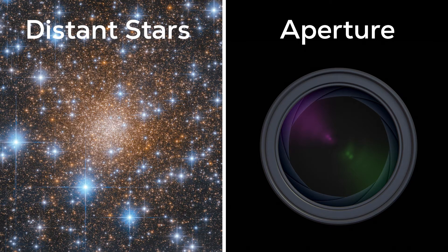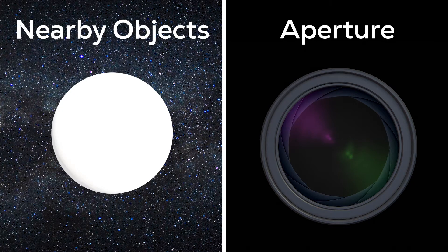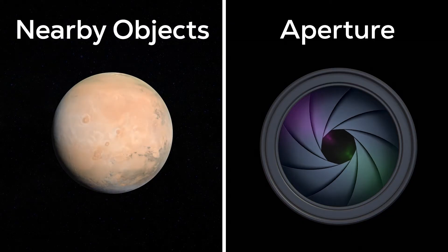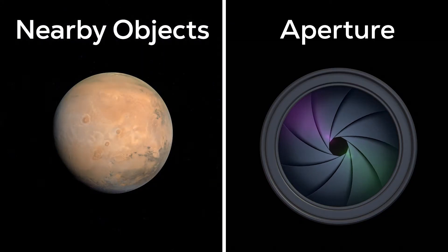But when a spacecraft takes a picture of a planet, it could use a narrower aperture so that it can pick up the detail of that much brighter object. This narrow aperture doesn't capture the dim light of the stars.